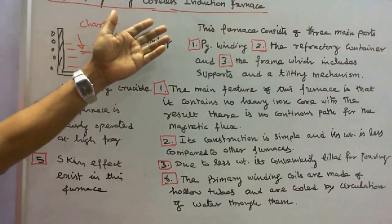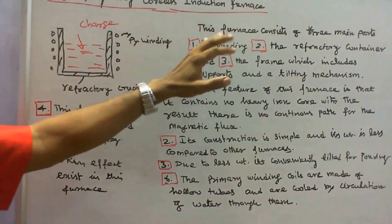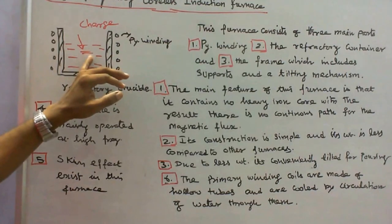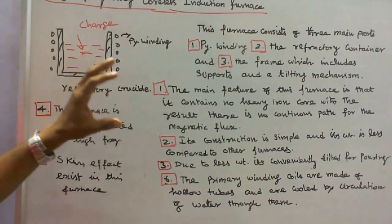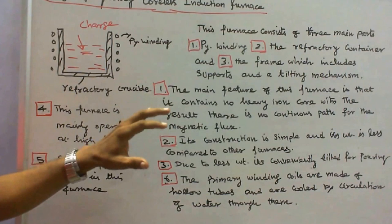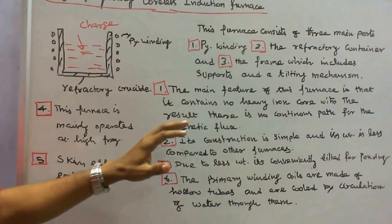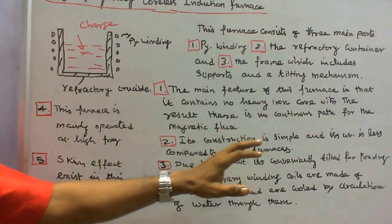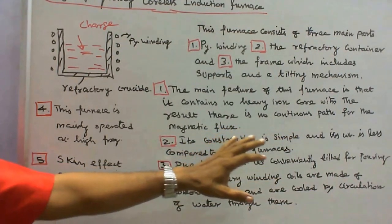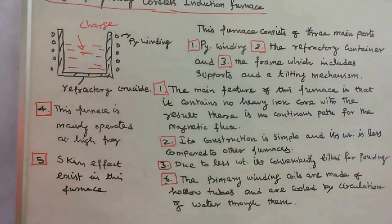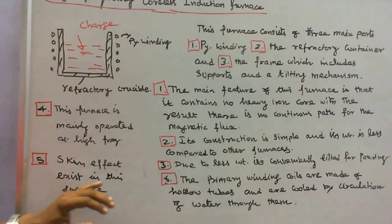The High-Frequency Coreless Induction Furnace consists of three main parts: one is the primary winding, two is the refractory container, and three is the frame which includes supports and tilting mechanism. The main feature of this furnace is that it contains no heavy iron core, and as a result, there is no continuous path for the magnetic flux. Its construction is simple and its weight is less compared to other furnaces. Due to less weight, it can be conveniently tilted for pouring. This furnace is mainly operated at high frequency, and naturally, the skin effect exists in this furnace.